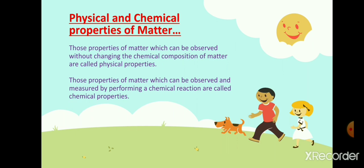For example, when I say that gold has a yellow color, then yellow color is the physical property of matter. Whereas the properties like combustibility, toxicity, stability in a given environment, the reaction with water, the reaction with acid, and the pH of a substance — they all are the chemical properties of matter, which can only be observed and measured by performing a chemical reaction.